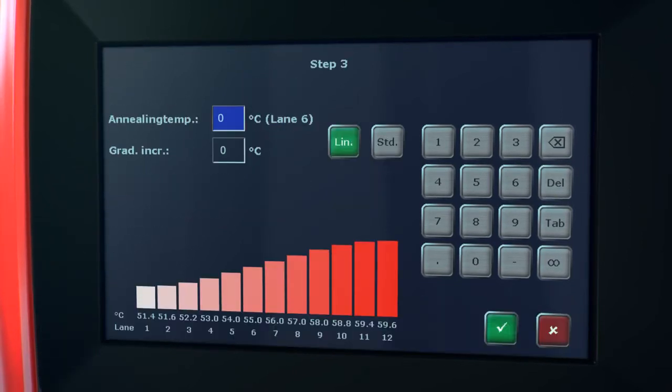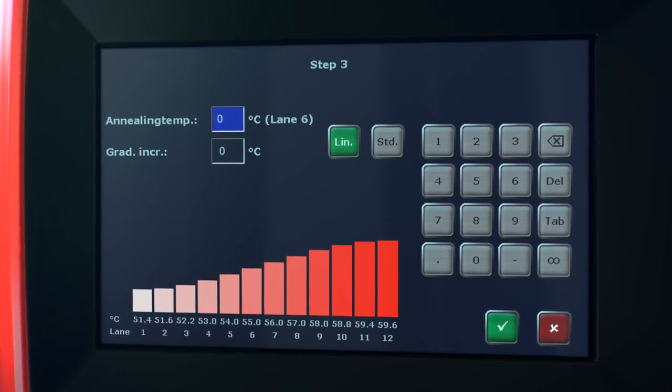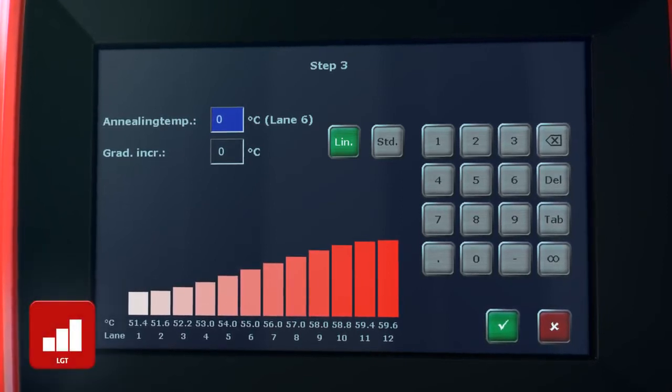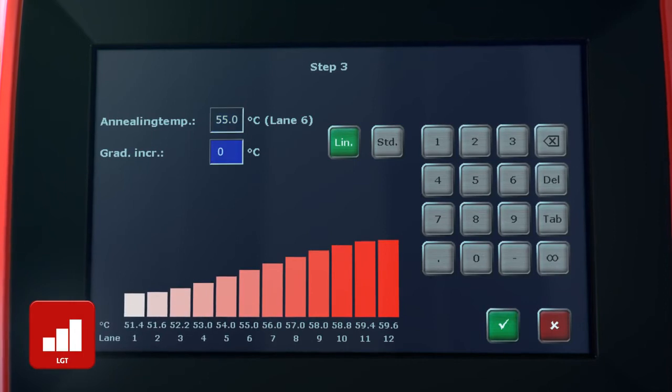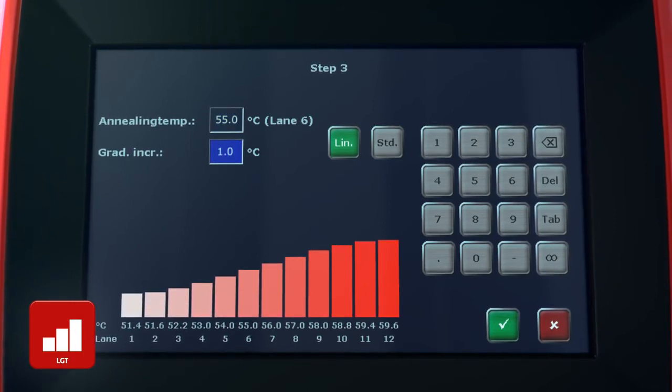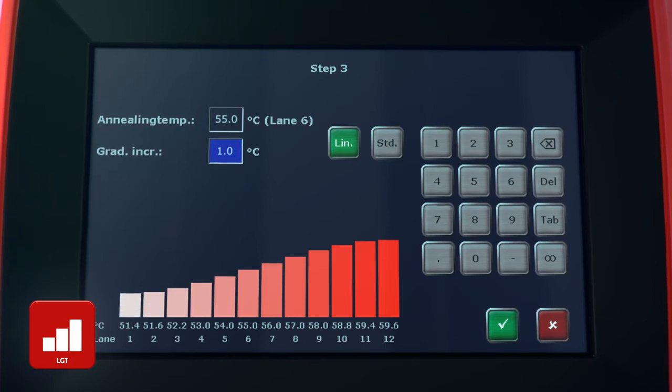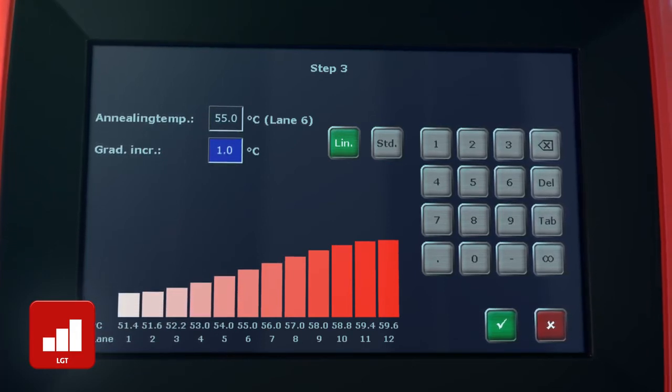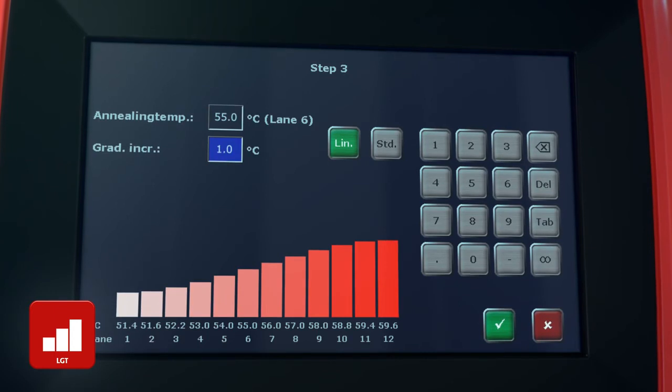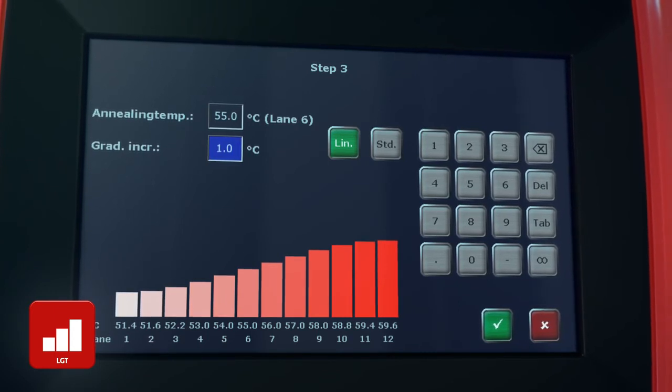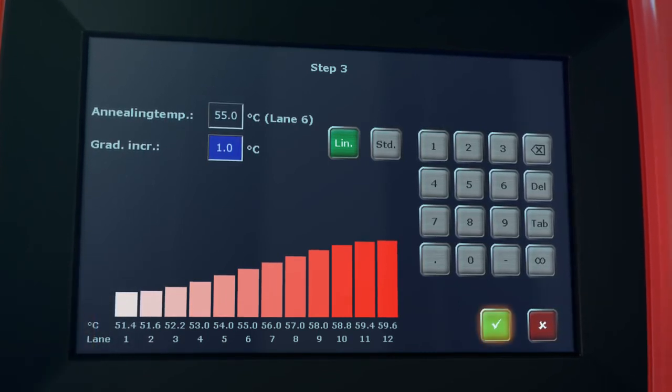Determining the optimum annealing temperature is a challenge when creating a new primer pair. The linear gradient tool enables programming of a temperature gradient with defined temperature intervals between the individual sample block rows. For maximum comfort, the linear gradient tool supports programming of even numbered temperature values by entering the calculated primer annealing temperature and the increment.